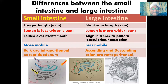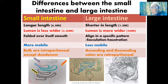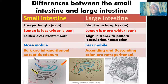The large intestine is outlined here and is configured in a specific pattern, running from the cecum on the right side, up through the ascending colon, across as the transverse colon directed towards the left, then the descending colon, followed by the sigmoid colon, the rectum, and the anal canal. That is how the small and large intestine are positioned within the abdominal space.